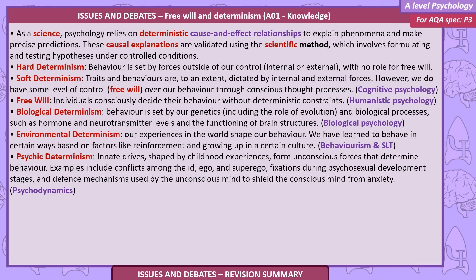Free will holds that individuals consciously decide their behaviour without deterministic constraints — associated with humanistic psychology. Biological determinism holds that behaviour is set by our genetics, including the role of evolution and biological processes such as hormone and neurotransmitter levels and the functioning of brain structures — associated with biological psychology. Environmental determinism holds that our experiences in the world shape our behaviour; we learn to behave in certain ways based on reinforcement and culture — associated with behaviourism and social learning theory.